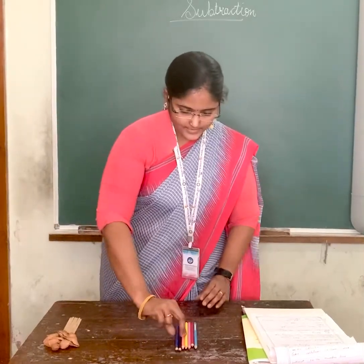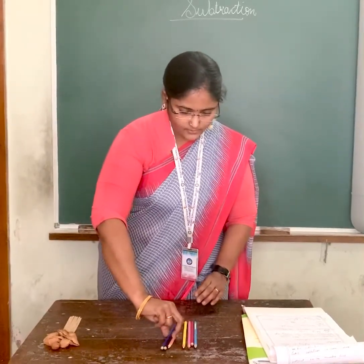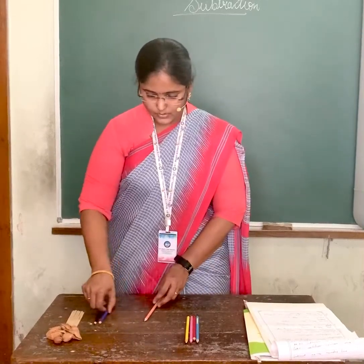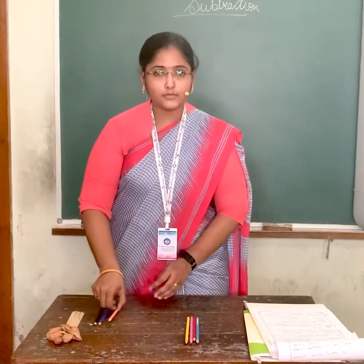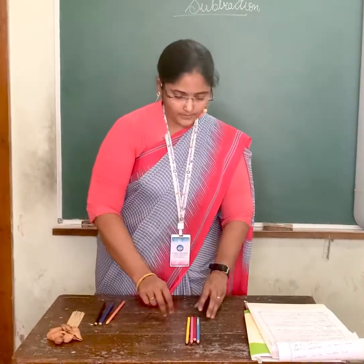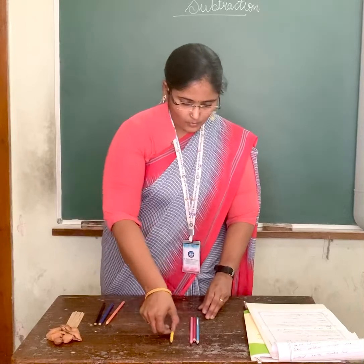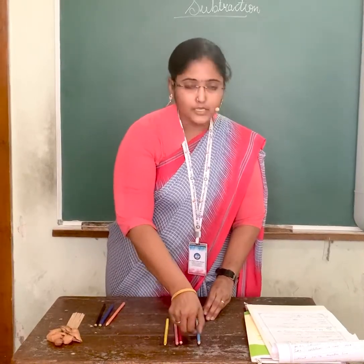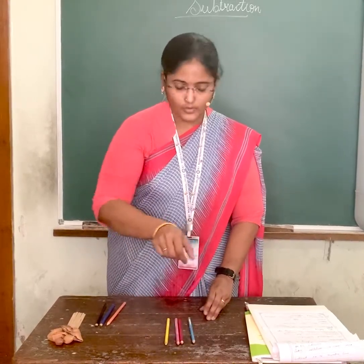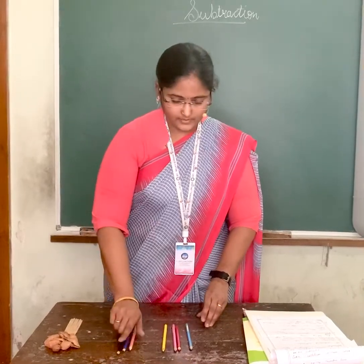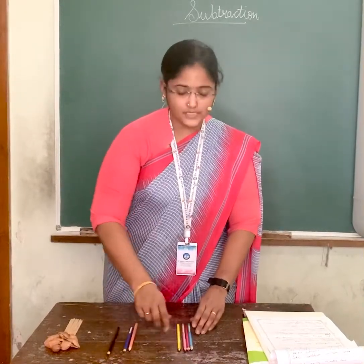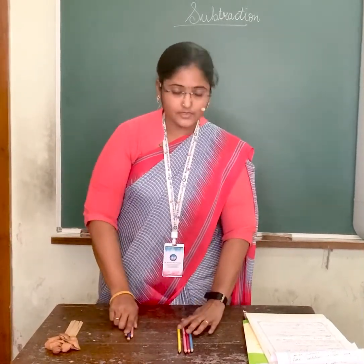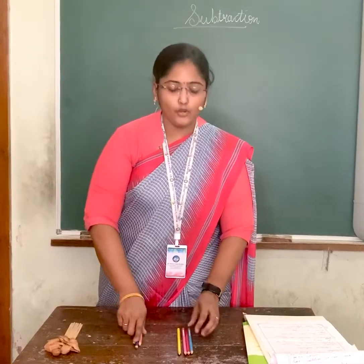Now I will take away 3 pencils: 1, 2, 3. Let's see how many are remaining: 1, 2, 3, 4. So we have seen that from 7, if we take away 3, the answer is 4.